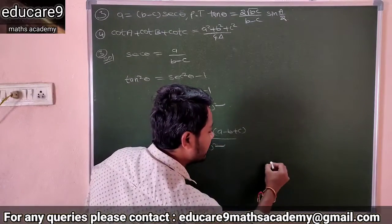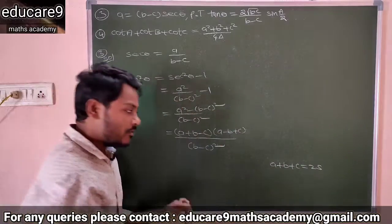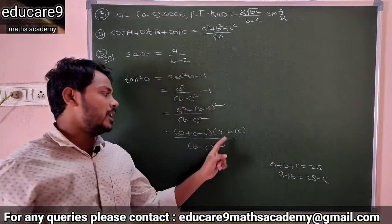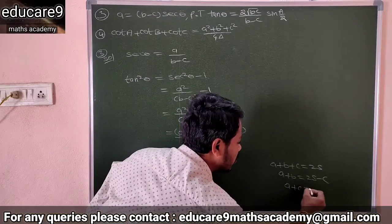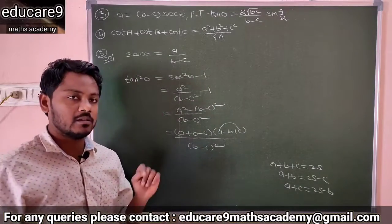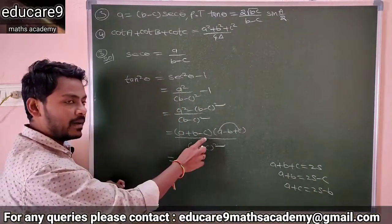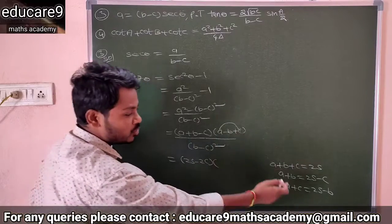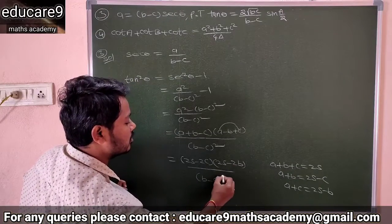You know the perimeter formula: a+b+c equals 2s. So a+b equals 2s-c, and a+c equals 2s-b. Substituting: (a+b-c) becomes (2s-2c) and (a+c-b) becomes (2s-2b). So you get tan²θ equals 4(s-b)(s-c)/(b-c)².